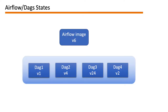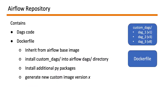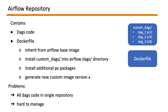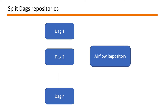For versioning, all we wanted to achieve was this — as shown in the picture — a single version of Airflow deployed in production that represents sets of DAGs with specific versions. Our initial thought was to have an Airflow repository containing all the DAG code plus a Dockerfile inheriting from the Airflow base image, installing the DAGs from a custom DAGs repository, adding additional Python packages if required, and generating a custom image. The problem here is all DAG code is in a single repository — imagine more than a hundred DAGs, with every developer accessing the same repository to make changes.